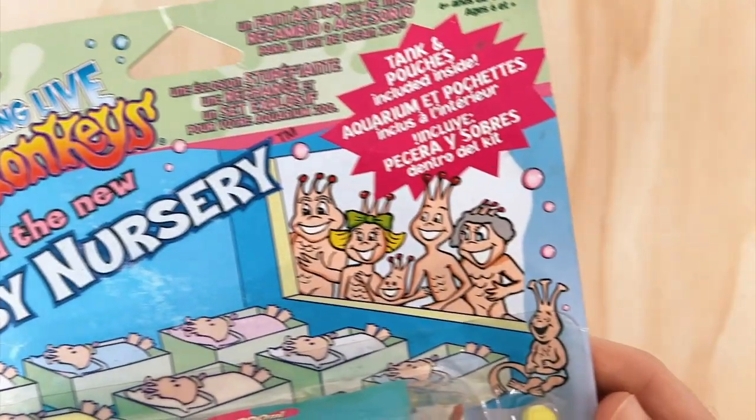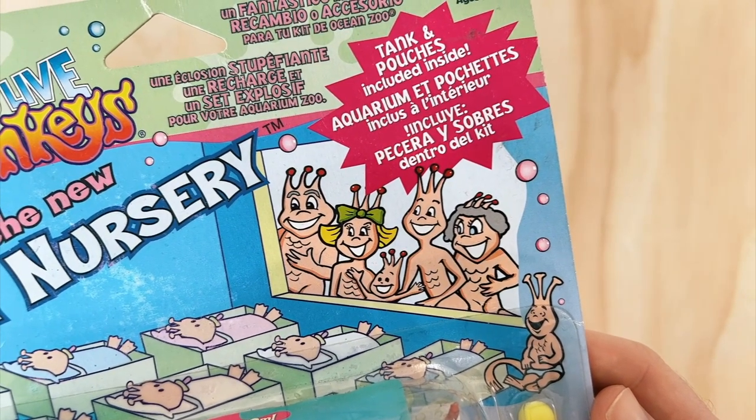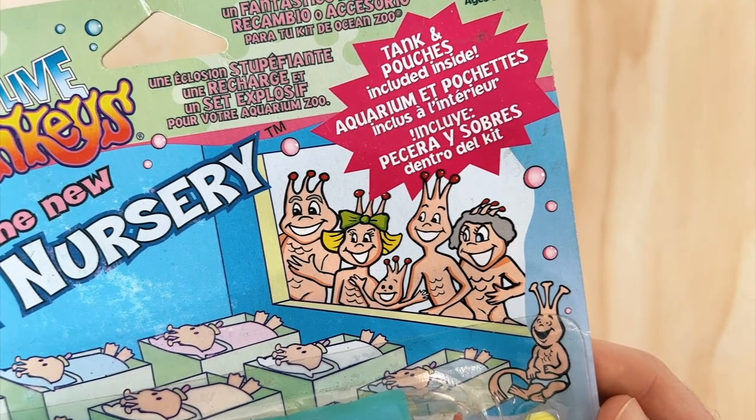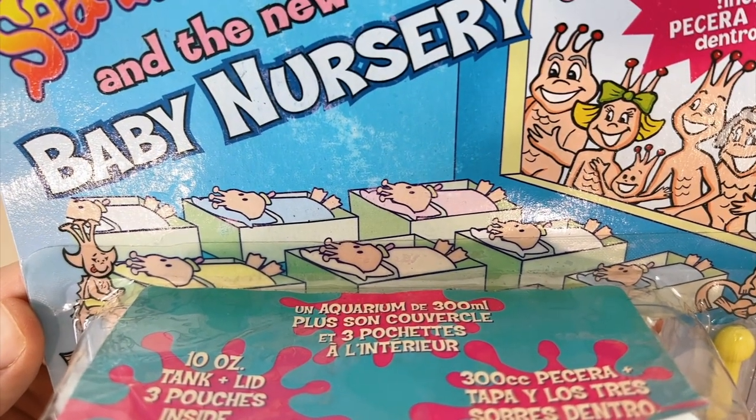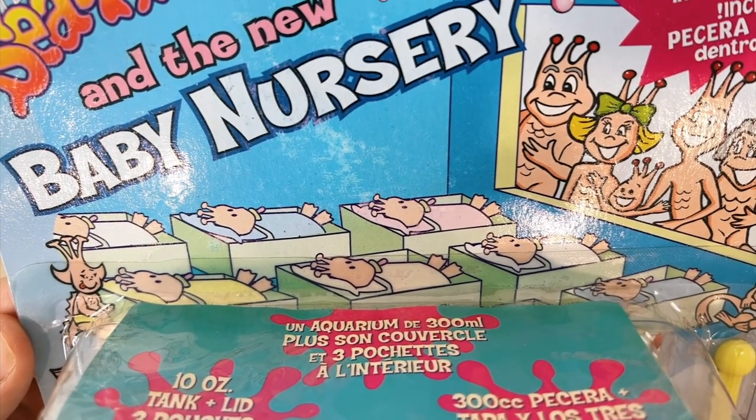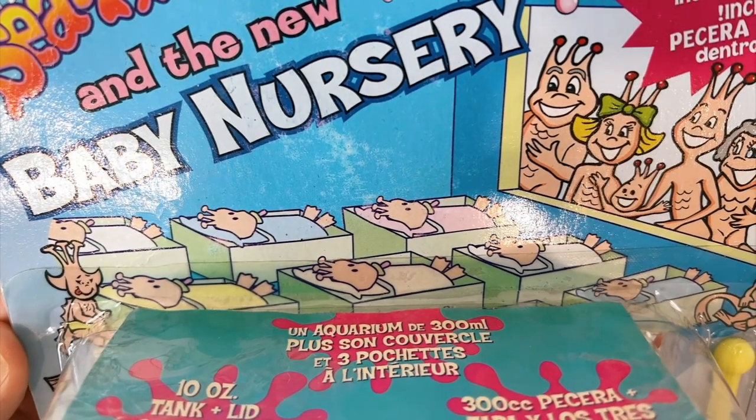The illustrations on the packaging are really wholesome and probably my favourite part of the whole kit. There's a sea monkey family peering through a window into a nursery with nine babies lying in their little cots. I assume all of these have probably come from the same mother, considering female brine shrimp are known to birth several babies at the same time.